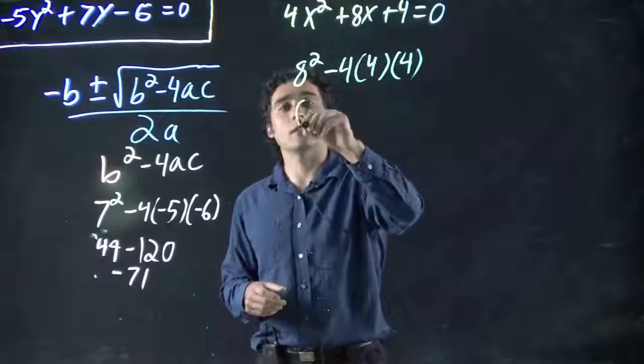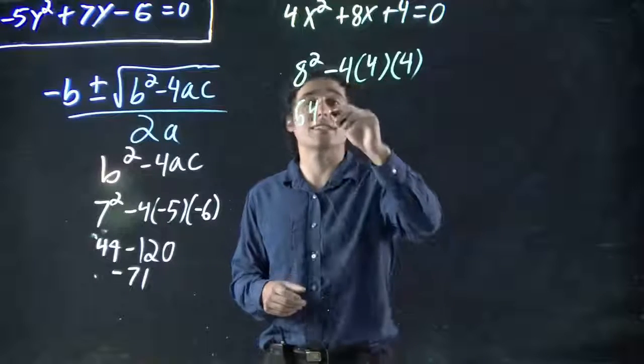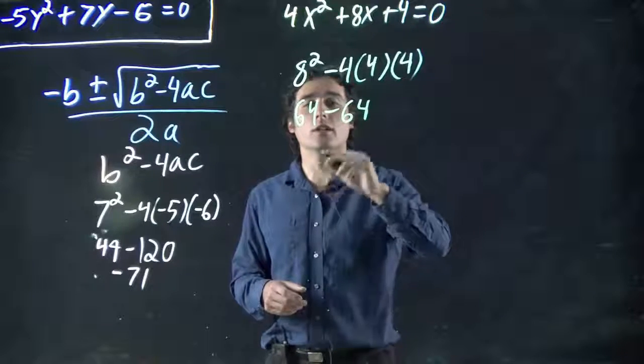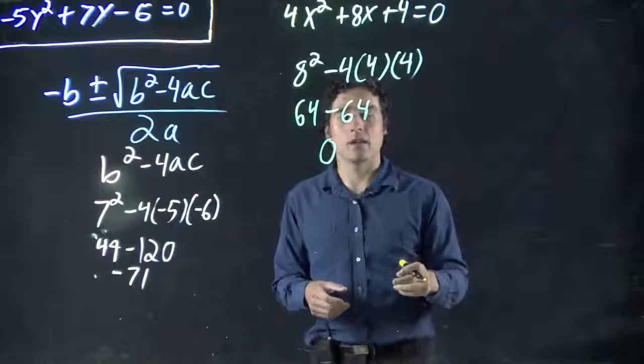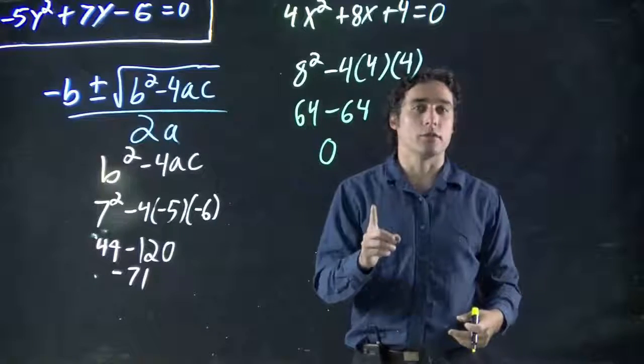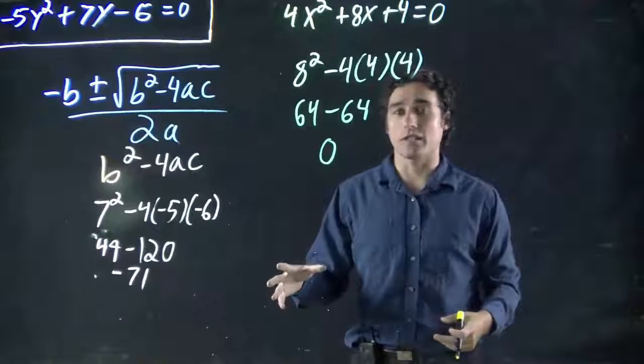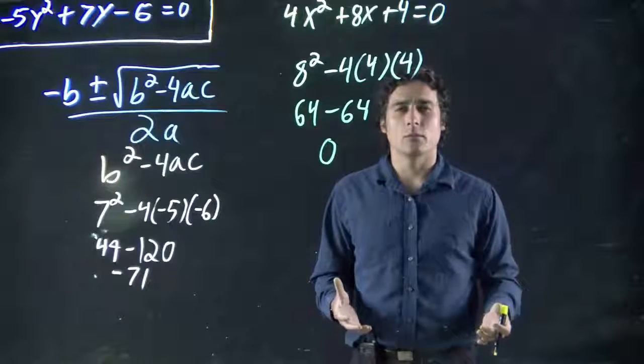What do we get? We get 64 minus 4 times 4 is 16 times 4 is actually 64. 64 minus 64, we get 0. What does this mean? Well if you learn about the discriminant it means there's one real root. So there is a solution to this. There's only one of them. We've seen many cases where there's two, but why is there only one?